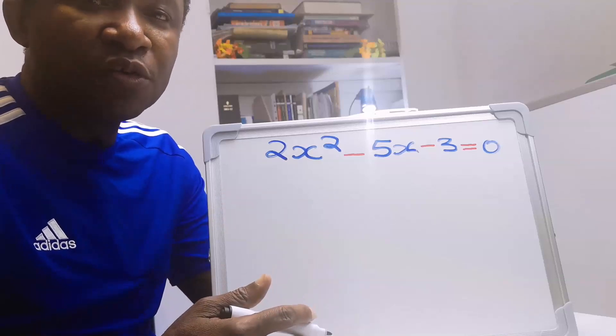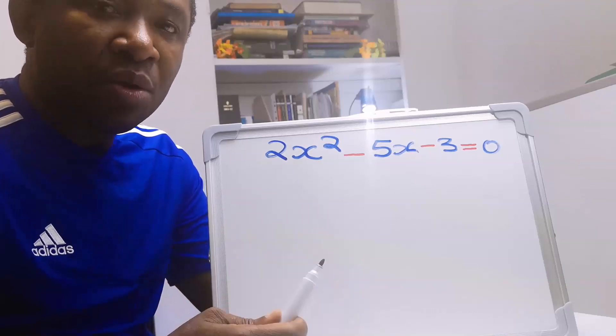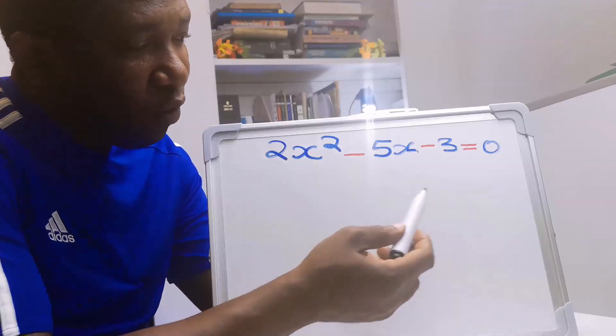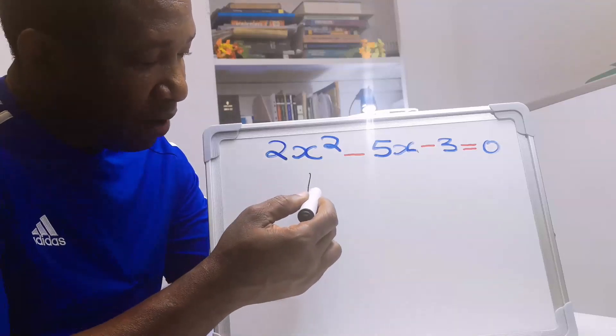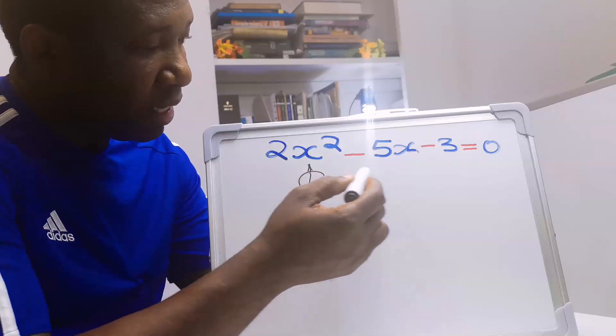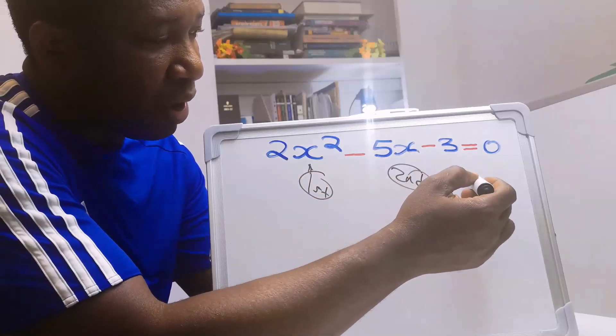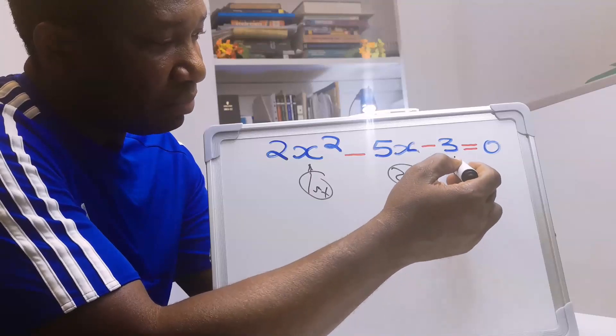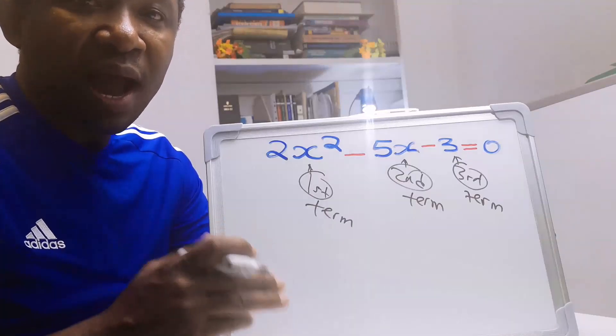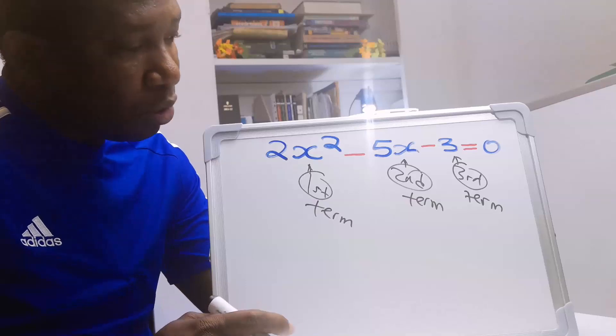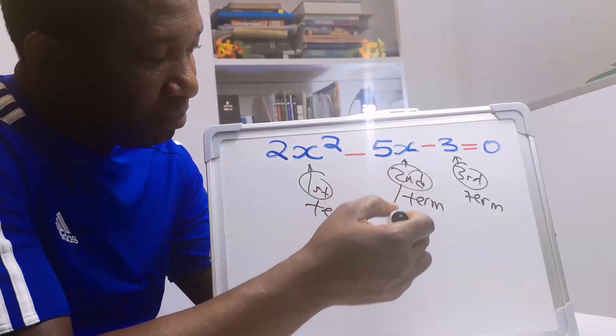The factor method of solving quadratic equation. We are going to need four terms. Here we have the first term and here we have the second term and here we have the third term. But to effectively apply the factor method, we are going to split this middle term into two.